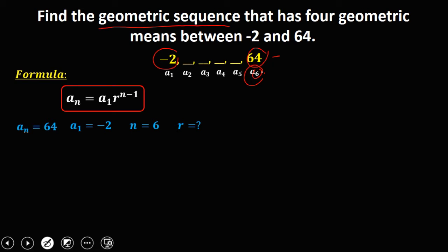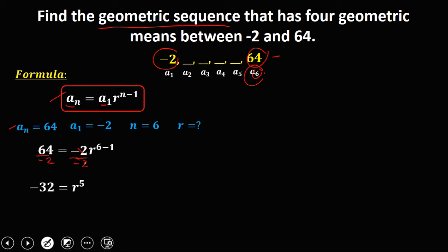Substituting these values into the formula: a sub n, that's 64, equals a sub 1, that's negative 2, times r to the power of n minus 1, which is 6 minus 1. Dividing both sides by negative 2, 64 divided by negative 2 is negative 32, and 6 minus 1 is 5.